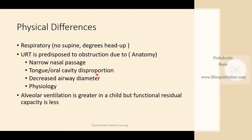In terms of physical differences, there are differences in the respiratory system. In case of a child patient, the child must not be placed in supine position; they must be tilted at an angle of 20 to 30 degrees head tilt position for treatment. The upper respiratory tract is predisposed to obstruction due to narrow nasal passages, disproportionate oral cavity, decreased airway diameter, and physiological differences. In a child, alveolar ventilation is greater but functional residual capacity is less. This ratio decides the changes in inspired gas concentration — meaning children react more rapidly to inhaled gases.